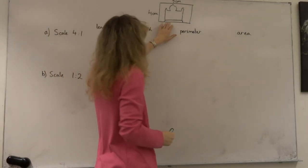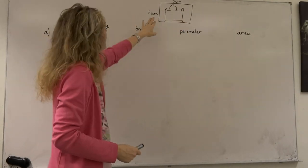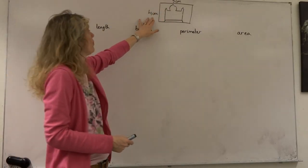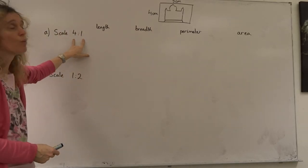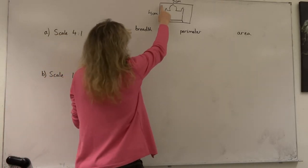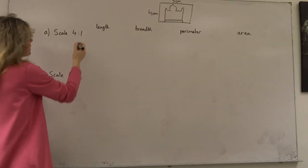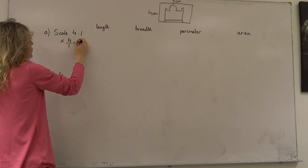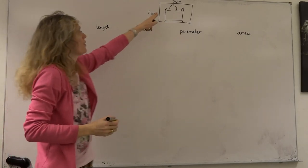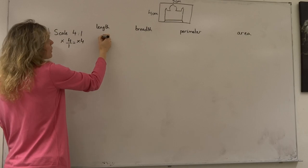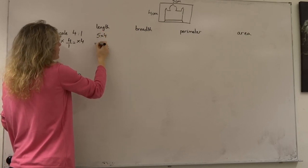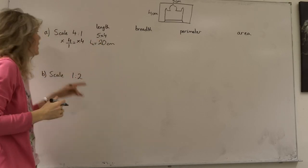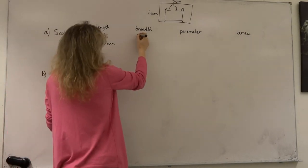Here we have a small photo of the Taj Mahal with dimensions of length 5 centimetres and breadth 4 centimetres. We're going to copy that picture at a scale of 4 to 1, which is a magnification. So we multiply by 4, meaning our length of 5 centimetres becomes 5 times 4, which gives us 20 centimetres.